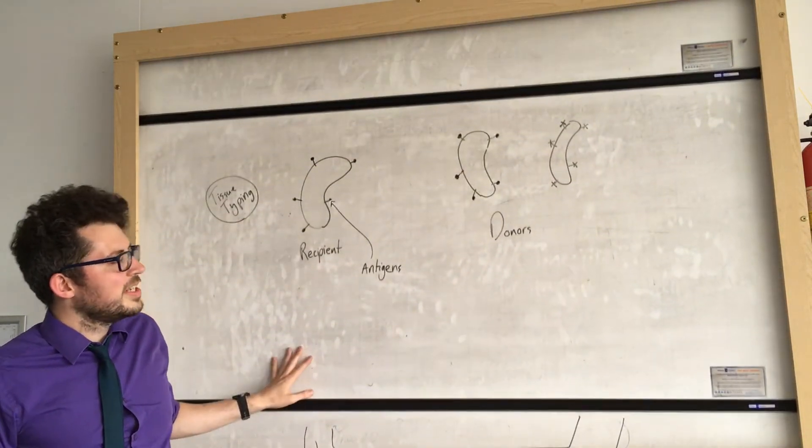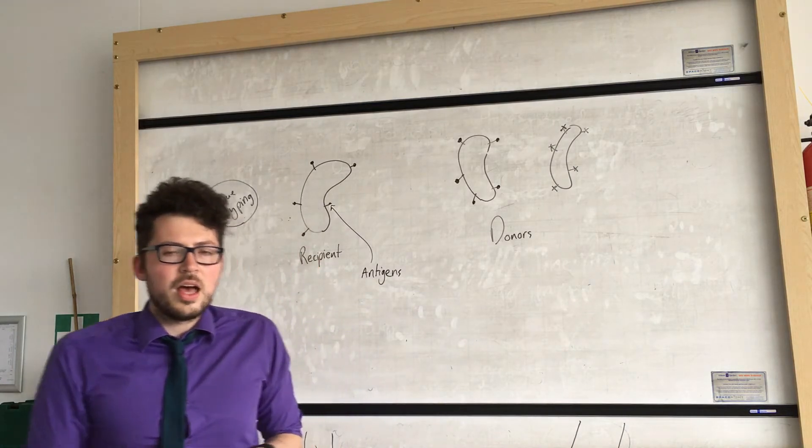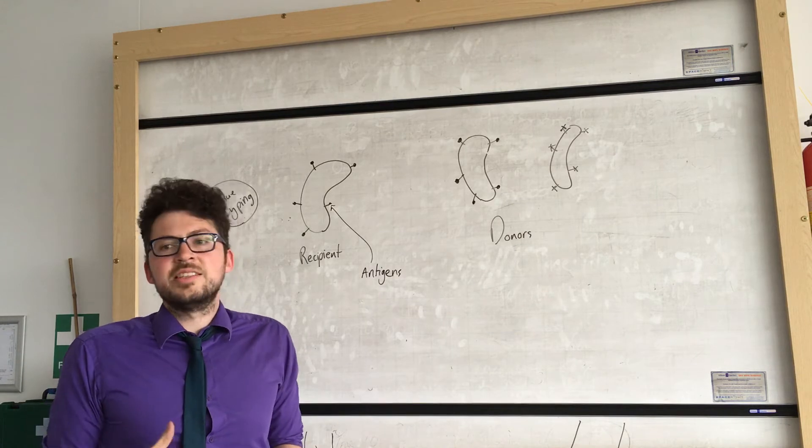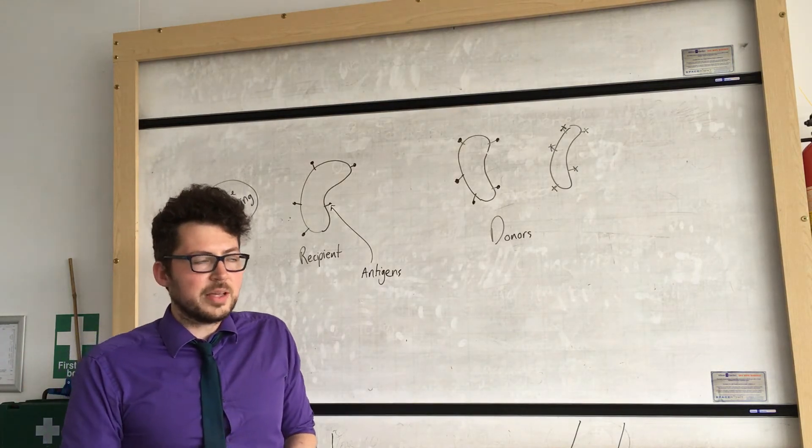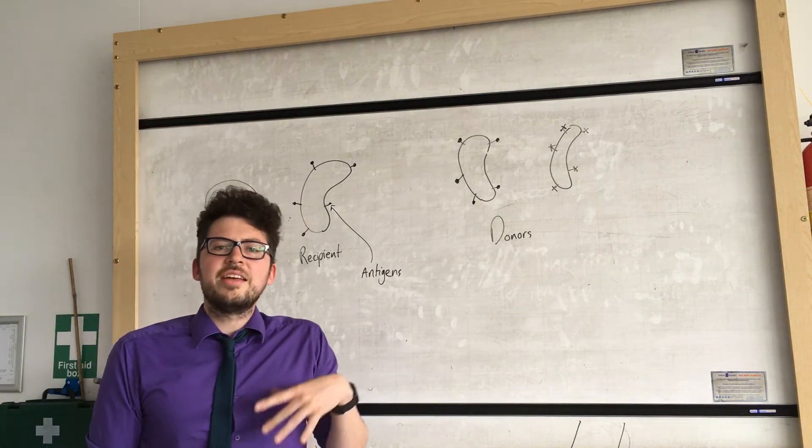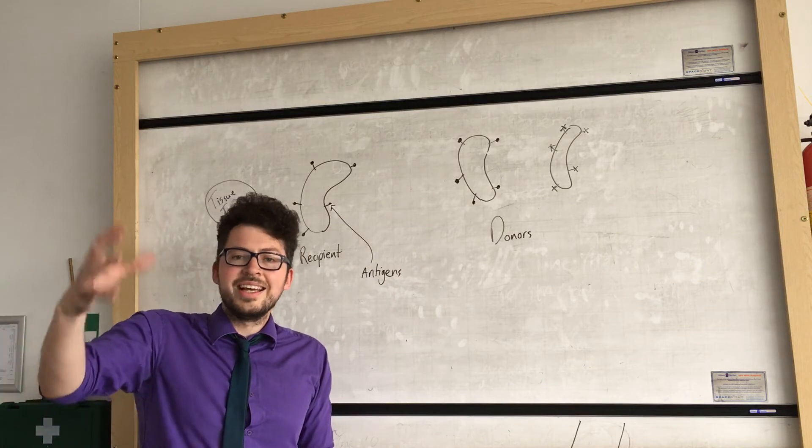Now the other way that we could potentially sort out kidney failure is by a transplant. Which I'm sure you know what that means. So obviously it involves removing the kidney that isn't working and replacing it with a functional kidney. But it's not quite that simple. We need to make sure that we match a few things between the person who is receiving the kidney and the donor.